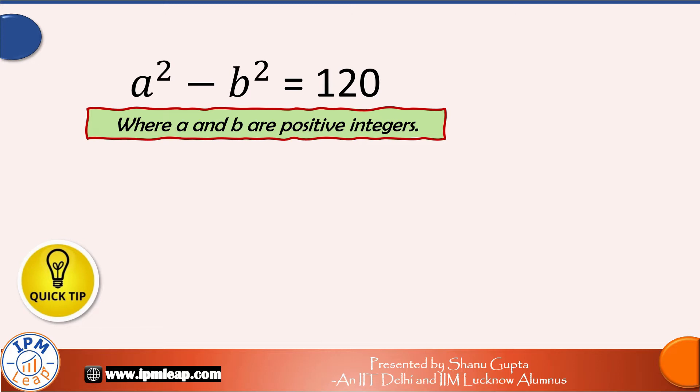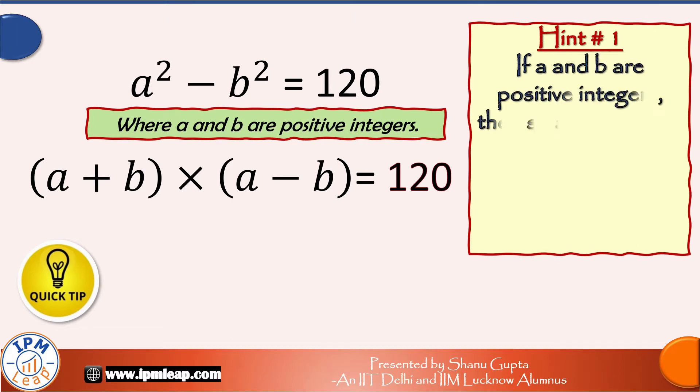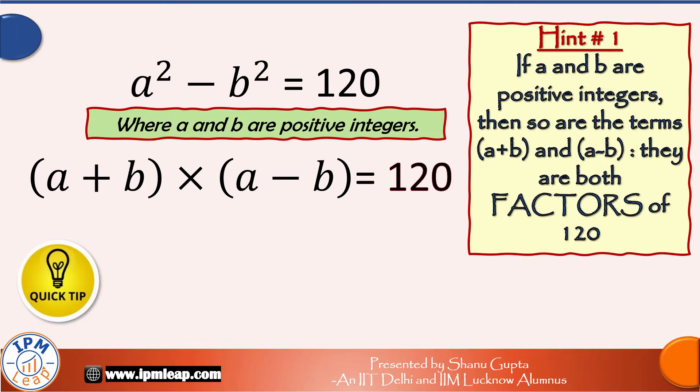Now we know that a square minus b square can be written as a plus b into a minus b and if a and b are integers then a plus b is also an integer and so is a minus b.